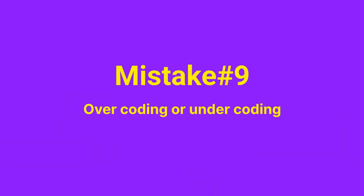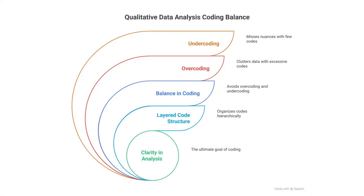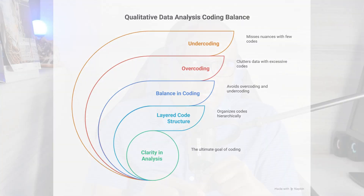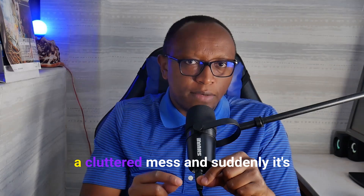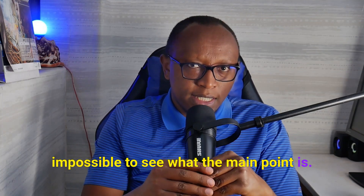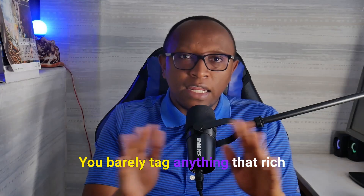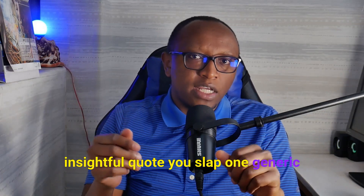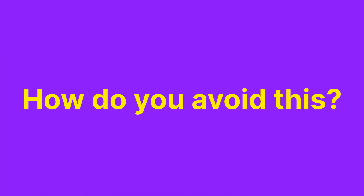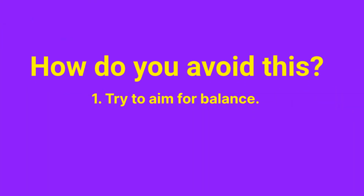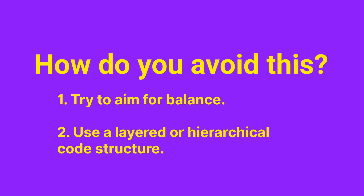Mistake number nine: overcoding or undercoding. Overcoding happens when you tag a single quote with every code under the sun — it turns your data into a cluttered mess. Undercoding is the opposite: you barely tag anything, and that rich, insightful quote gets one generic code and its nuance is gone. To avoid this, aim for balance — don't chase quantity, chase clarity. Use a layered or hierarchical code structure so that broad themes are at the top with more specific subcodes underneath, capturing both depth and the bigger picture.